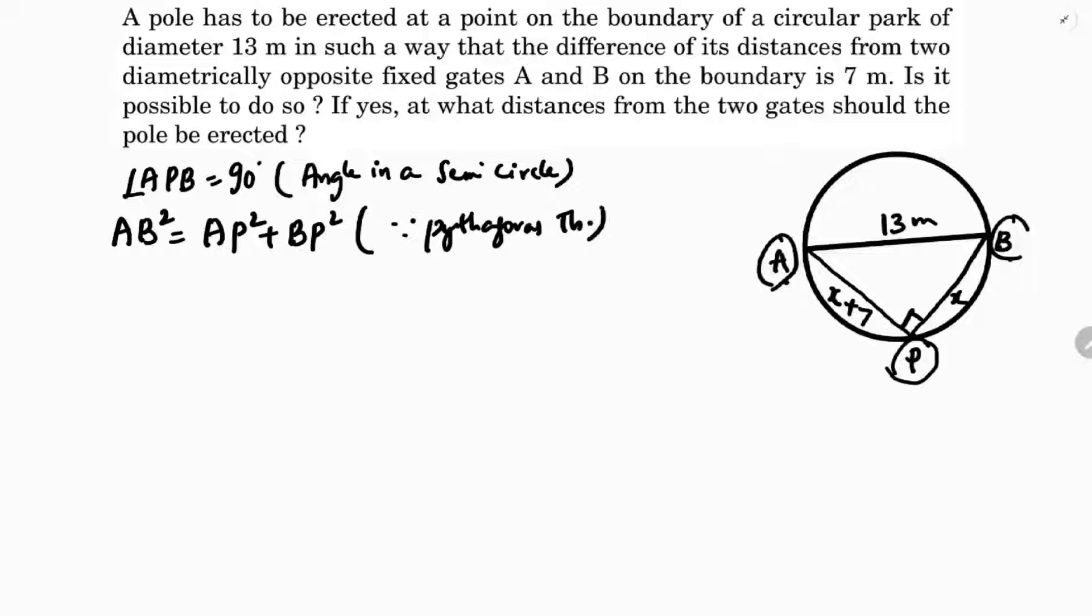Now AB is 13 square, AP is considered as X plus 7, the other one BP as X. So 169 equals X plus 49 A plus B whole square, so A square plus 2AB plus B square.